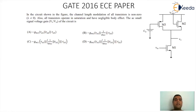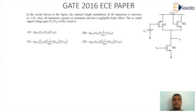The next question is from the GATE 2016 ECE paper. In the circuit shown, the channel length modulation of all transistors is non-zero, i.e., λ ≠ 0. This means we have output resistance of the MOSFET measured between drain and source. All transistors operate in saturation and have negligible body effect. Find the AC small signal voltage gain VO/VIN.